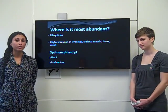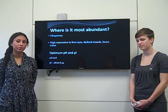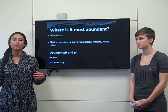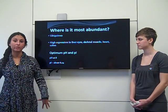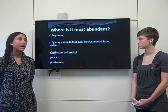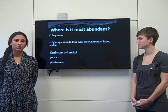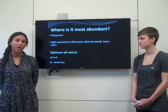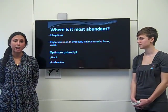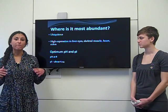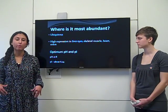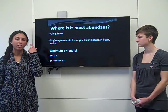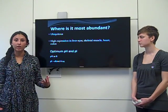This enzyme, through the techniques of northern blotting, was found to be ubiquitous, meaning it's found throughout tissues in our entire body. Northern blotting also found that there is very high expression in areas throughout our body that are prone to oxidative stress, such as our liver, the lens of our eyes, the colon, and the heart.